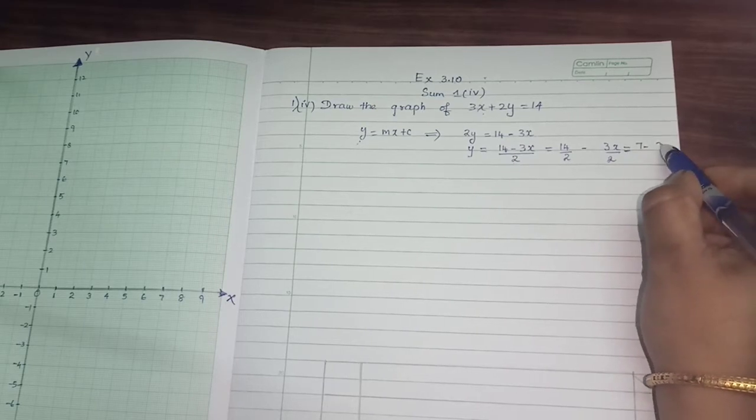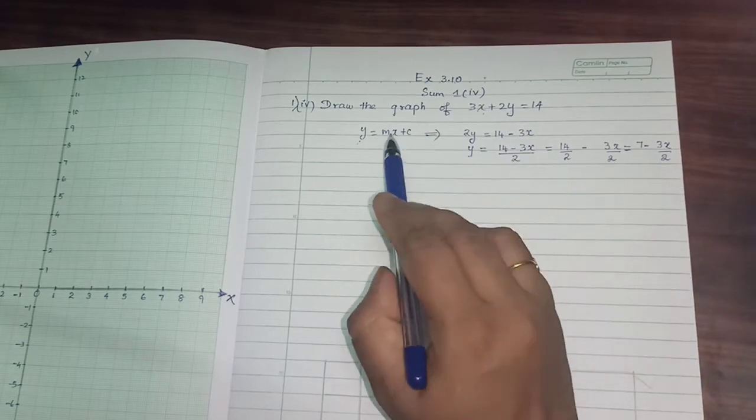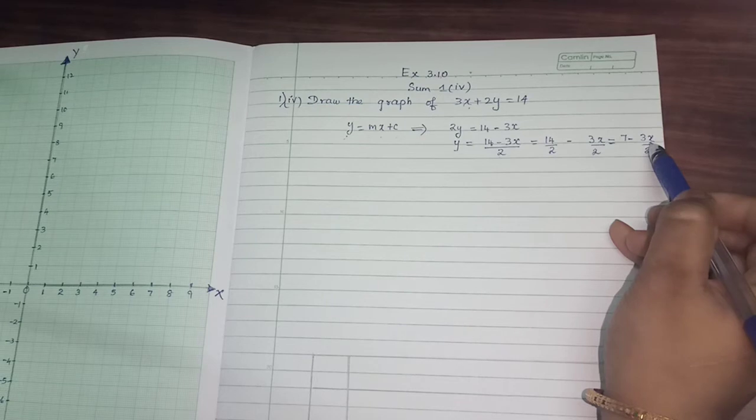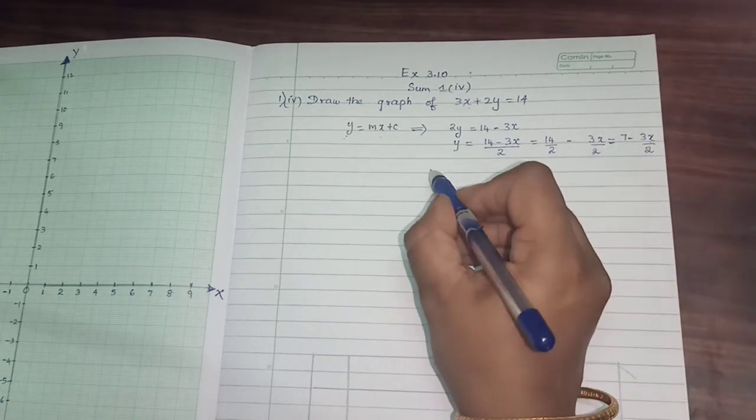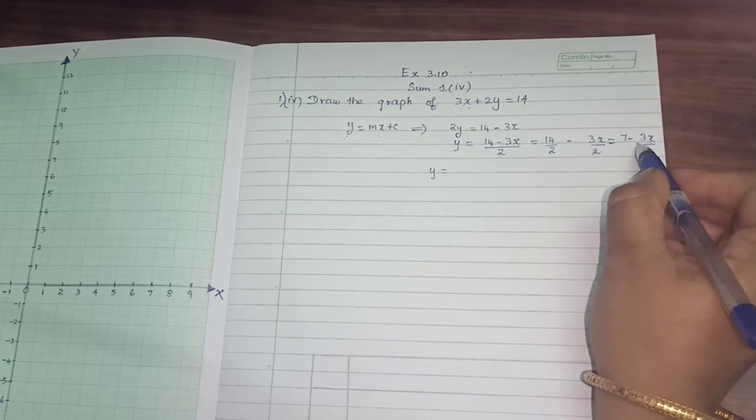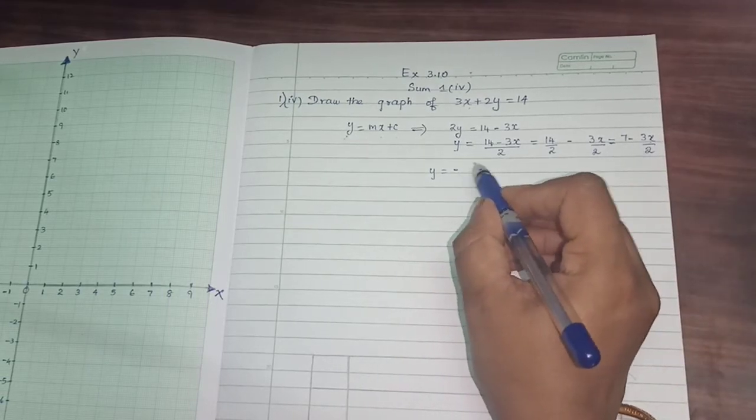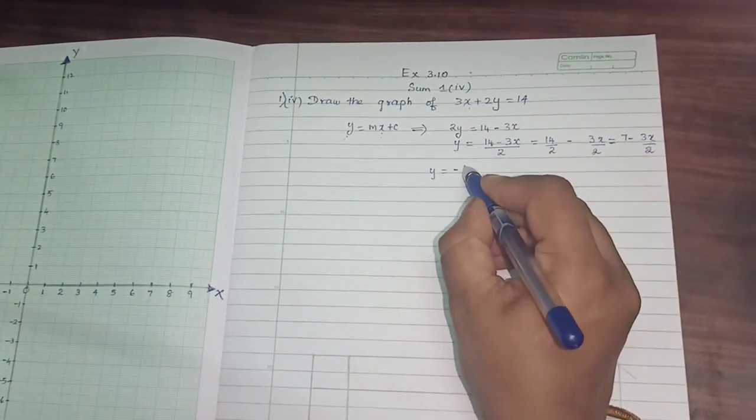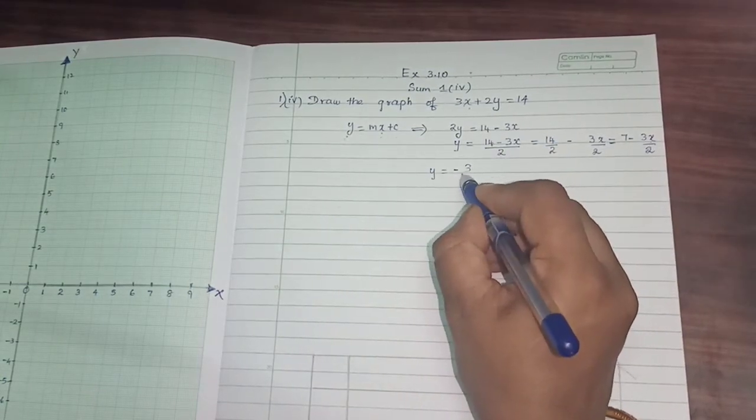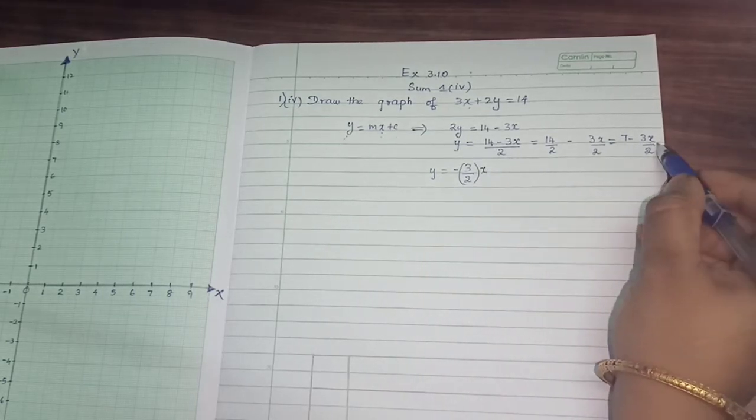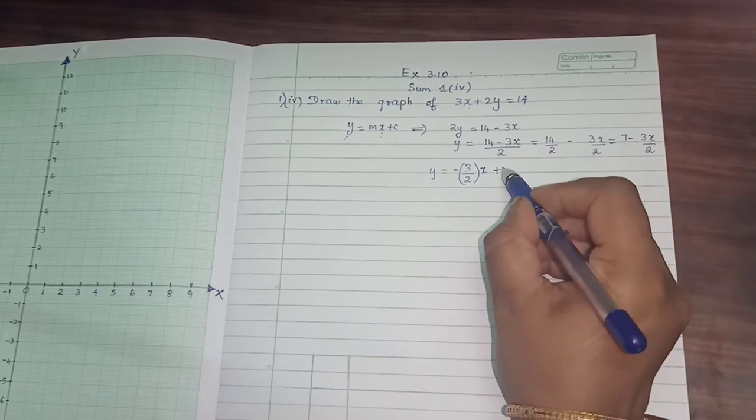7 minus 3x by 2. So just look at the form mx plus c. We will transpose minus 3x first. So y is equal to, I am just interchanging the terms because first term is x. So minus 3 by 2 of x, plus 7.